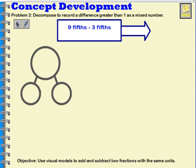Let's try this one, 9 fifths minus 3 fifths. If I think about having 9 of something, and I subtract 3 of them, that would leave me with 6 of whatever it was left over.